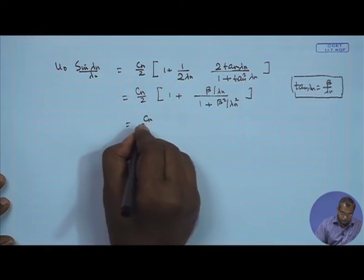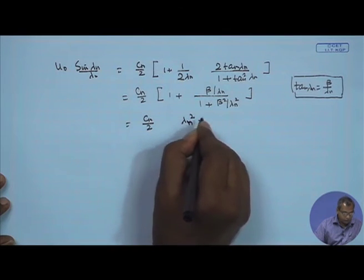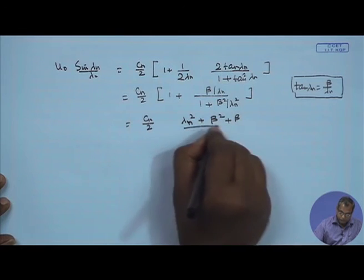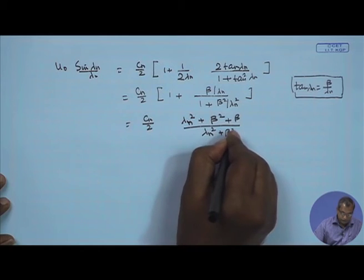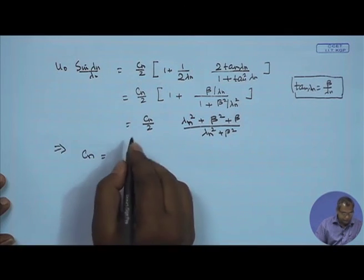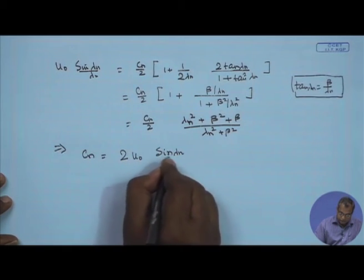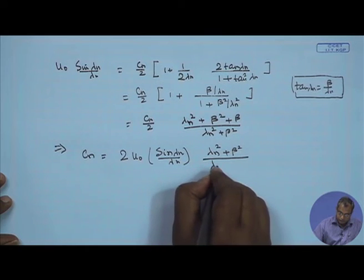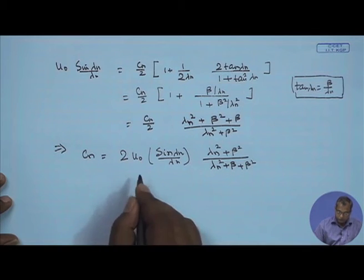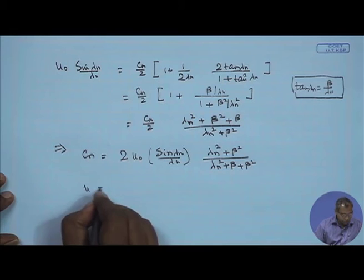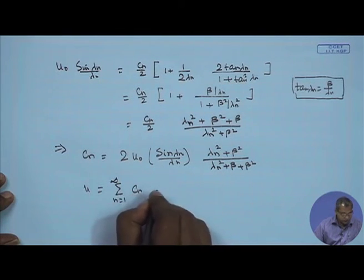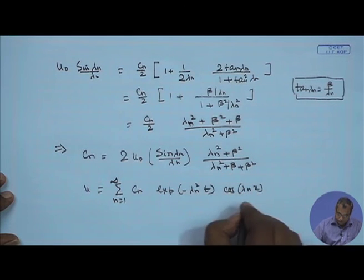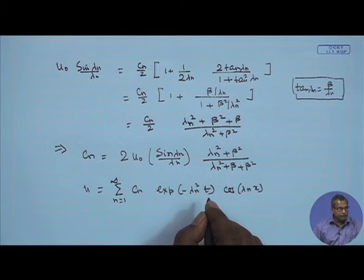After substitution, c_n evaluates to: c_n = [2 u_0 sin(λ_n)/λ_n] times [(λ_n² + beta²)/(λ_n² + beta² + beta)]. The complete solution is u = summation from n=1 to infinity of c_n exp(minus λ_n² t) cos(λ_n x). This is a fourth kind of boundary condition problem with Neumann at x=0 and Robin/mixed at x=1.